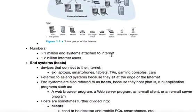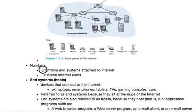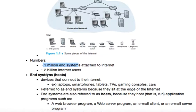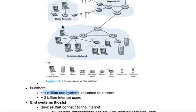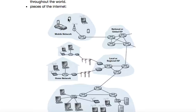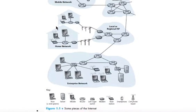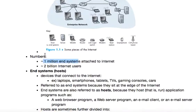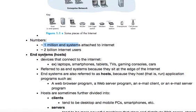Now, there are about 1 million end systems attached to the internet, and about 2 billion internet users, so it's very huge. The end systems are things like phones, laptops, computers, PCs — anything that connects to the internet. They can be called end systems or hosts.